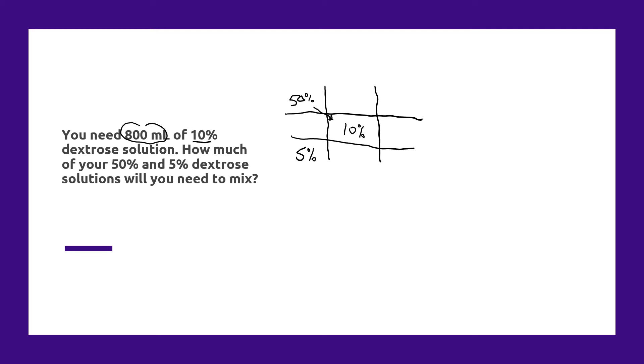Now we take our higher concentration, subtract the target concentration, and put that number in the bottom right. Then we take the desired concentration, subtract the lower concentration, and put that number up here in the upper right.